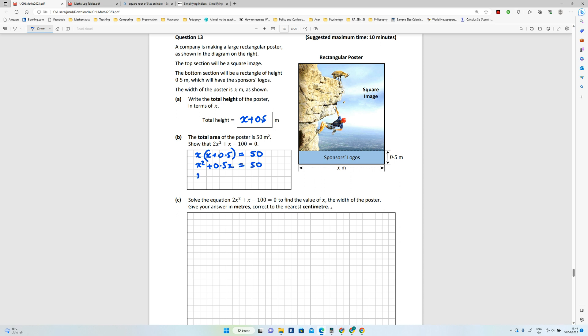If I bring over the 50, that's going to be minus 50 equals 0, and then double everything. That will be 2x squared plus x minus 100 equals 0.